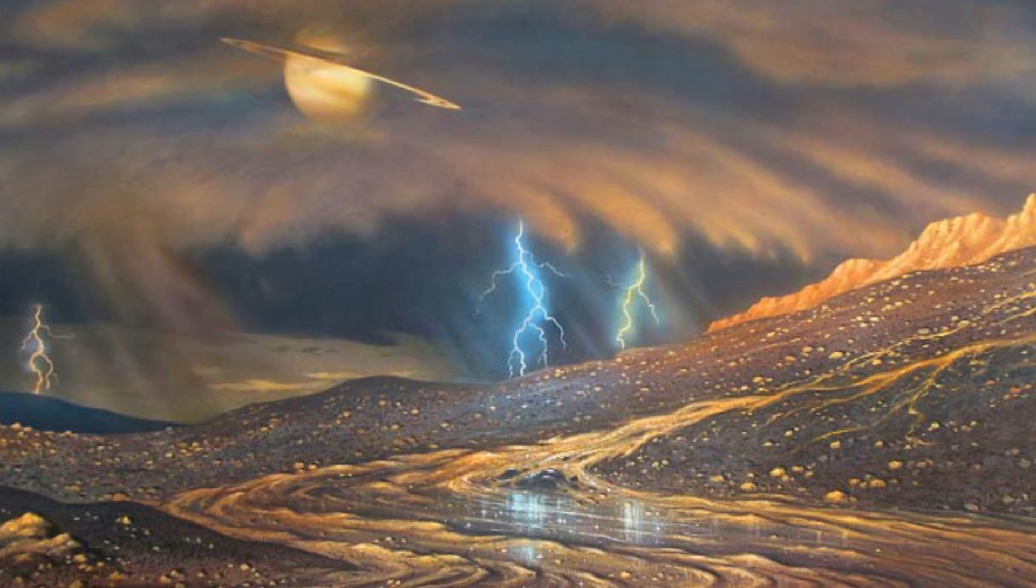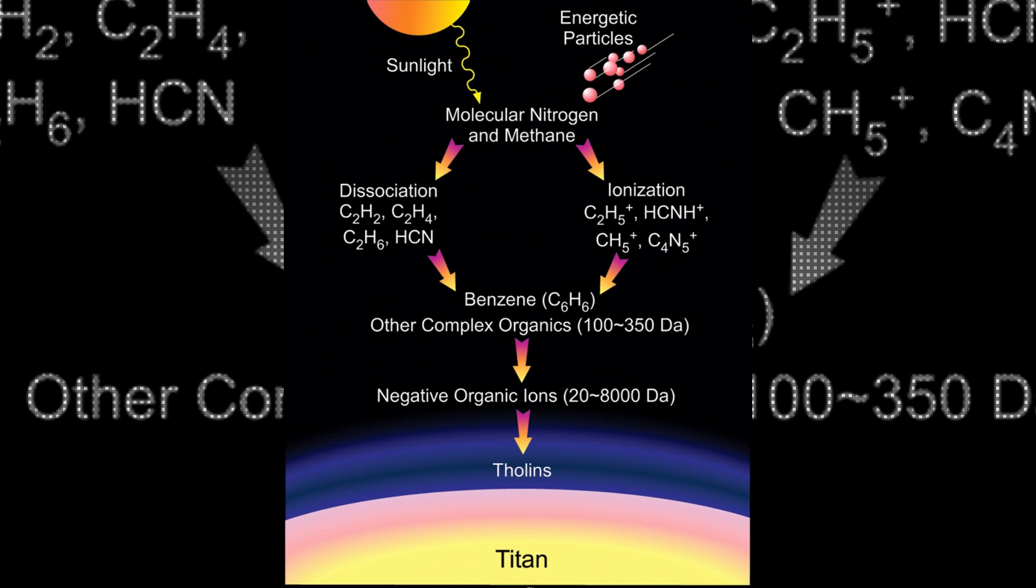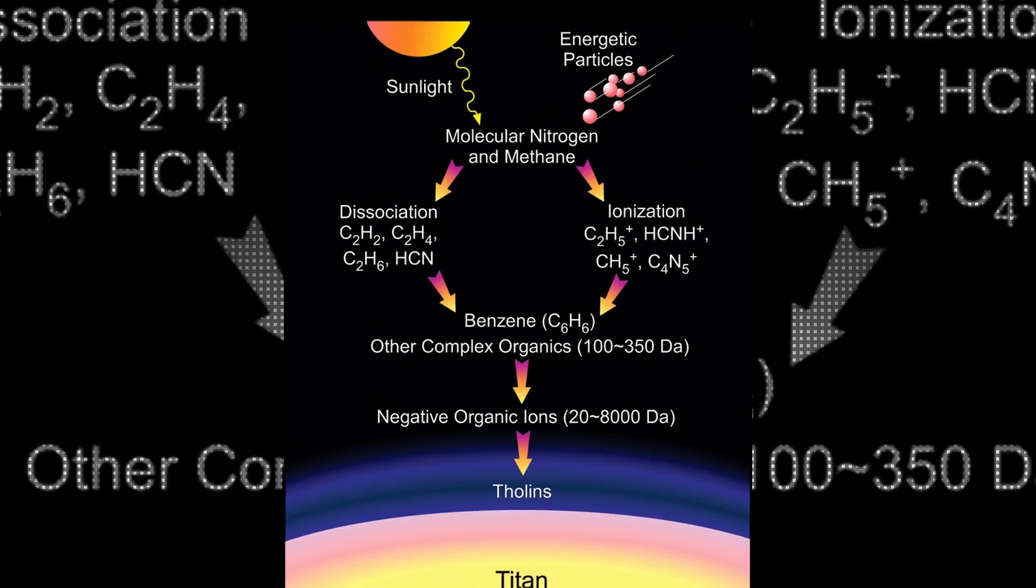However, because it rarely rains on Titan, the leading theory now is that the sand simply falls out of the tholin haze directly onto the surface, much like snow on the surface of a satellite.